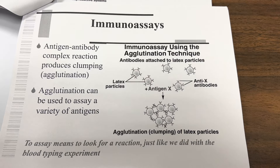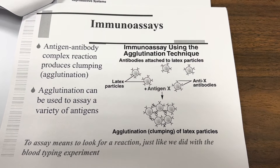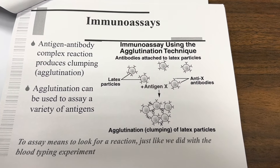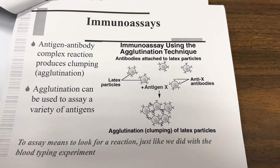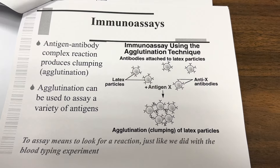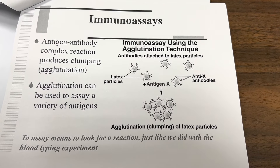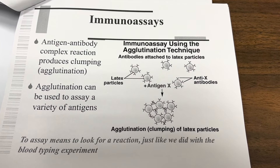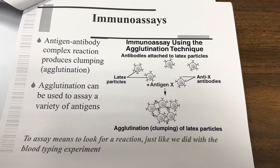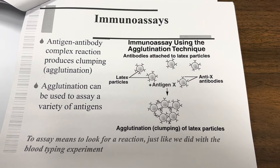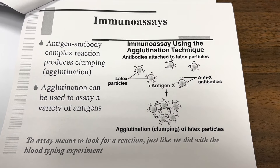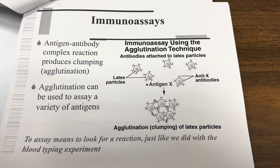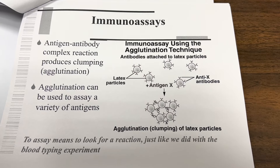Immunoassay using agglutination technique: antibodies are attached to latex particles. Latex particles plus antigens cause agglutination — clumping of the latex particles. Immunoassay means to look for a reaction, just like we did with the blood typing experiment. Antigen-antibody complex reaction produces clumping agglutination, and agglutination can be used to assay a variety of antigens.